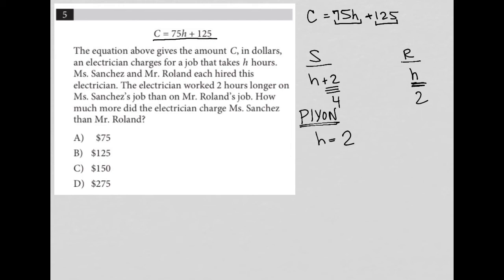Let's see what happens. Basically for Mr. Rowland, the charge would be 75 times two plus 125. That is 150 plus 125, and that is $275.